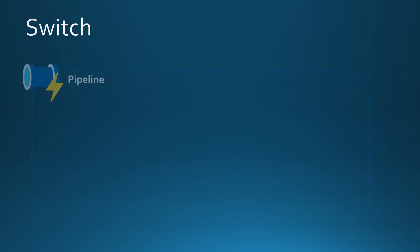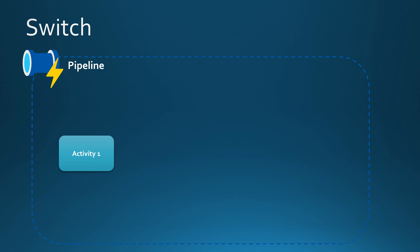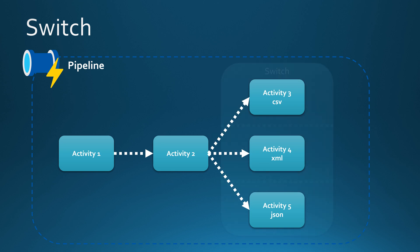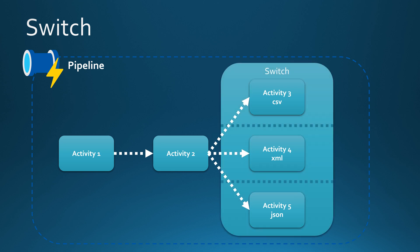Let's cover the Switch activity in more detail. In our setup we have a Data Factory pipeline with Activity 1 followed by Activity 2. After that, we have Activity 3 to run when CSV files come in, Activity 4 for XML files, and Activity 5 for JSON files. We wouldn't want to run all these at the same time; instead, we run them based on the file type currently coming into the pipeline. We can wrap these in a Switch activity to execute different cases based on the file type.